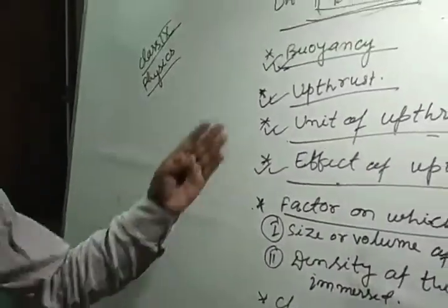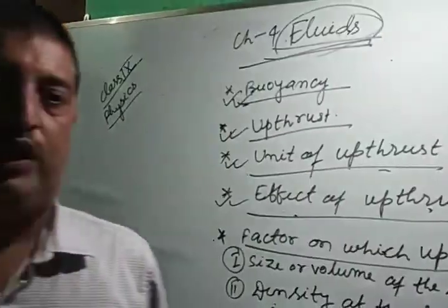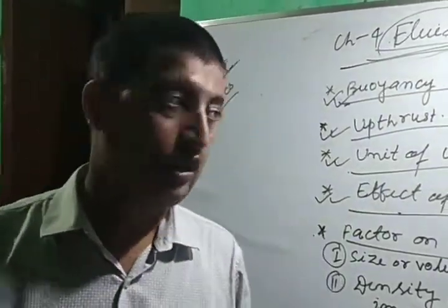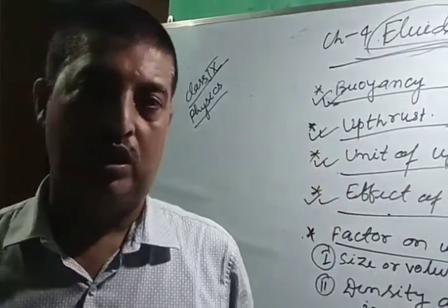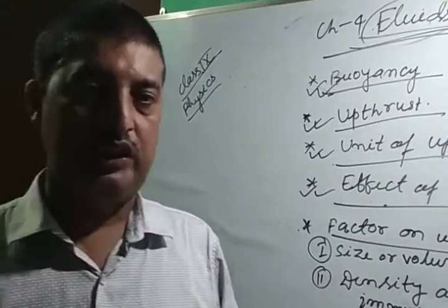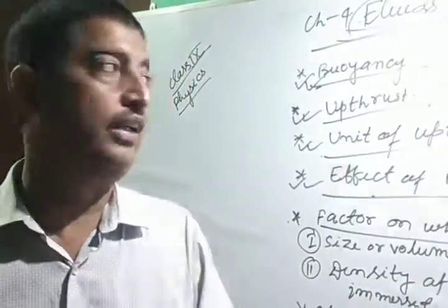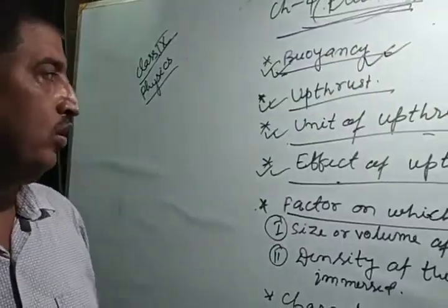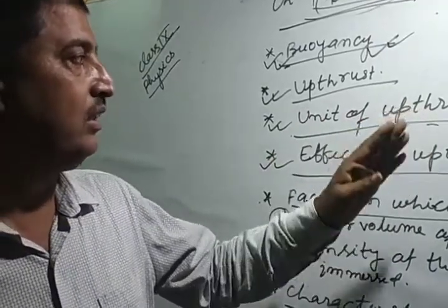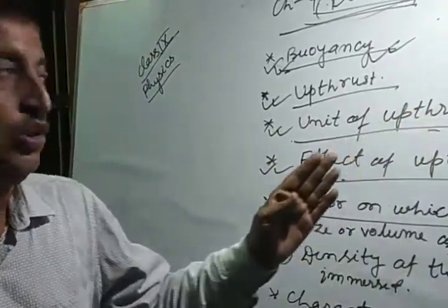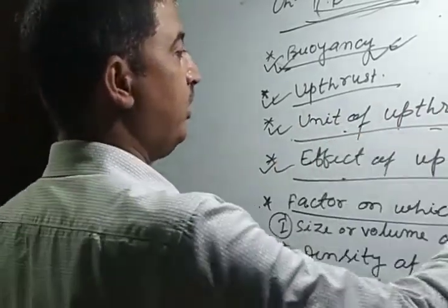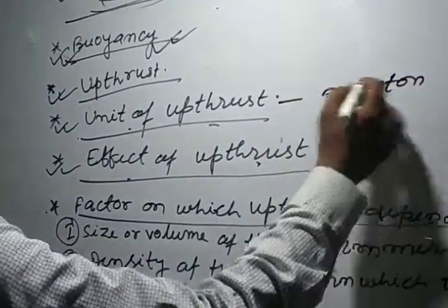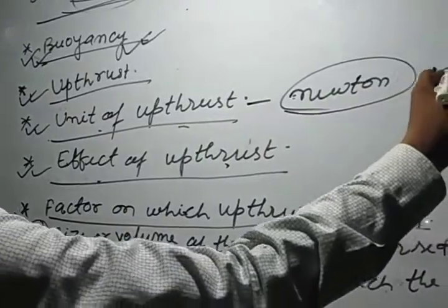Let us start with buoyancy. When we immerse any body in a liquid, then it experiences an upward force. That force is called upthrust, and the characteristic by which it experiences an upward force is called buoyancy. Upthrust is also called buoyancy force. Since upthrust is a force, the unit of upthrust is also Newton, denoted by N.